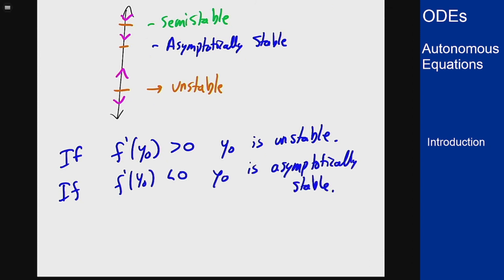And just like some of our tests from earlier calculus classes, if it equals zero then we have no idea. The test is inconclusive, you have to go back to actually looking at the graph, seeing whether it's above and below the axis to determine what's going to be there, but all semi-stable cases will fall to that case of having this derivative being zero.